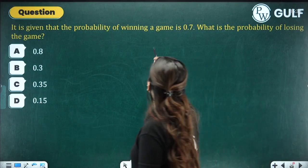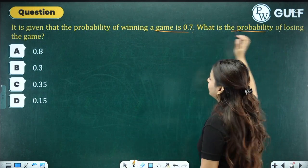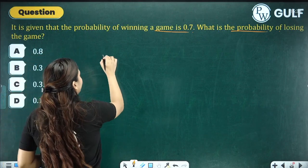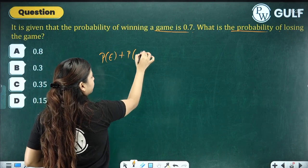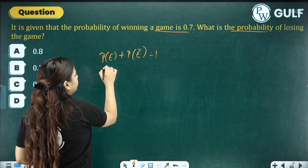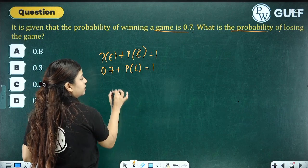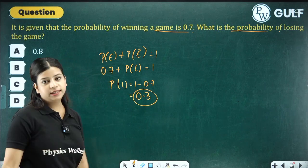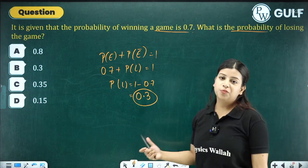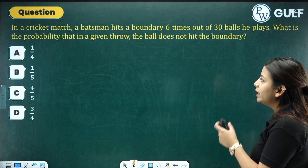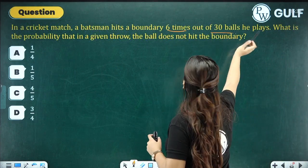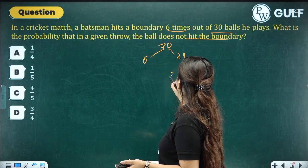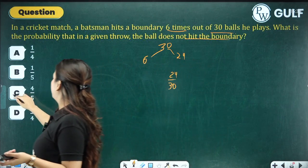It is given that the probability of winning a game is 0.7. What is the probability of losing the game? The maximum probability is 1. So probability of any event plus probability of its complement equals 1. Probability of losing = 1 − 0.7 = 0.3. In a cricket match, a batsman hits a boundary 6 times out of 30 balls. Probability of not hitting the boundary = 24/30 = 4/5.